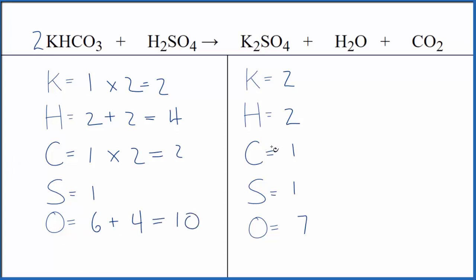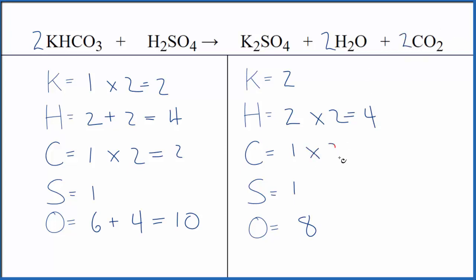On the product side, we can update the hydrogens. Put a two in front of the CO₂ — that gives us four oxygens from CO₂. Four plus two plus two gives us eight oxygen atoms. Let's update the carbons: put a two in front of the CO₂, one times two — those are balanced. Now update the oxygens: four plus two times one is six, plus two times two is four. Six plus four is 10.